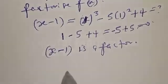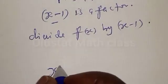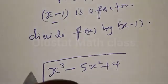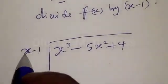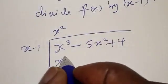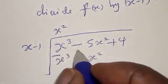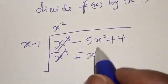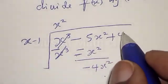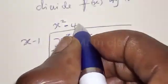Now let's divide f of s by s minus 1 using the polynomial long division method. We have s³ minus 5s squared plus 4 divided by s minus 1. s goes into s³ giving s squared. Then s squared times s minus 1 gives s³ minus s squared. Subtracting, we are left with minus 4s squared. Then bring down plus 4.